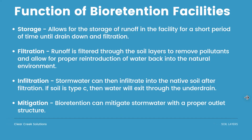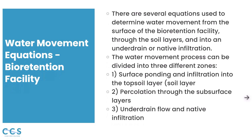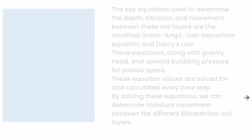There are four main functions for bioretention facilities. First, storage: it allows for the storage of runoff in the facility for a short period of time until it drains down or infiltrates. Second, filtration: runoff is filtered through the soil layers to remove pollutants and allow for proper reintroduction of water back into the natural environment. Third, infiltration: stormwater can then infiltrate into the native soil after filtration; if the soil is type C or till, the water will probably exit through an underdrain. Fourth, mitigation: bioretention can mitigate stormwater with a proper outlet structure.